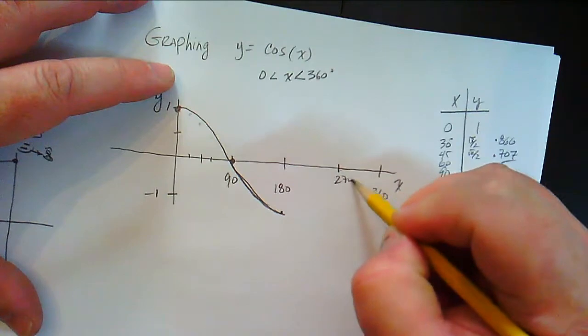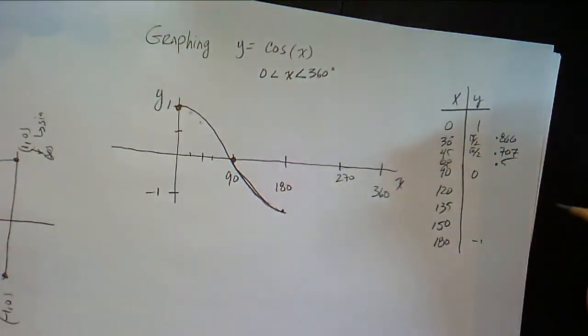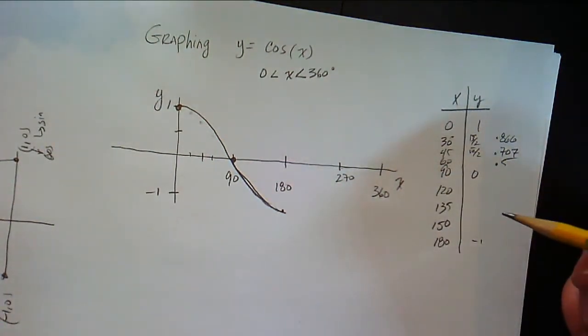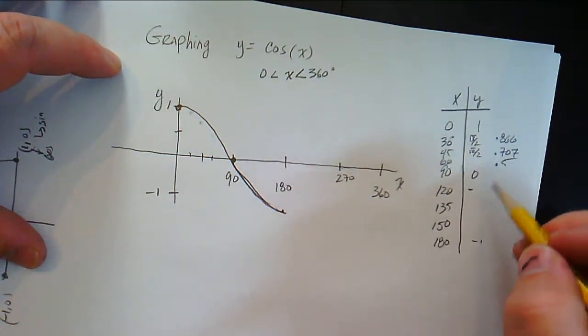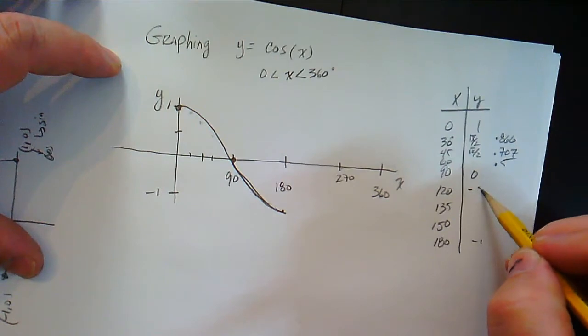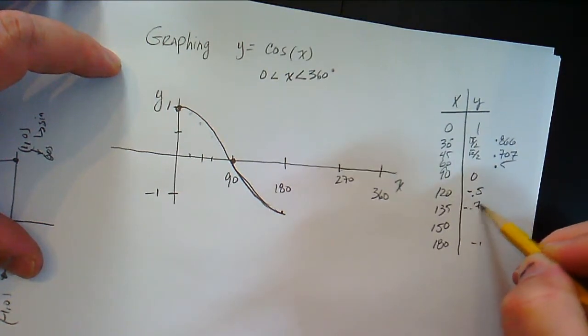At 270, we cross right back through here again. And the reason we know this is true is, well, here, this is negative 0.5, and this is negative 707, and this is negative 0.866.